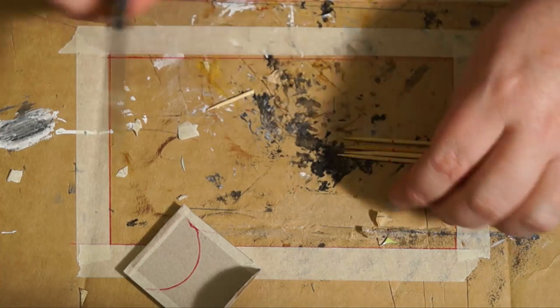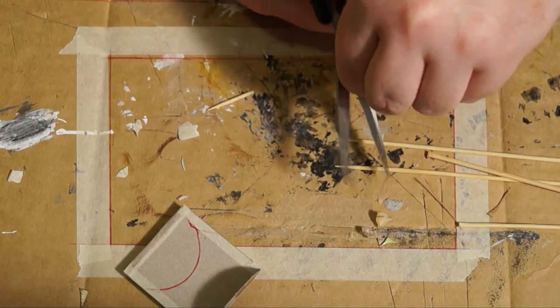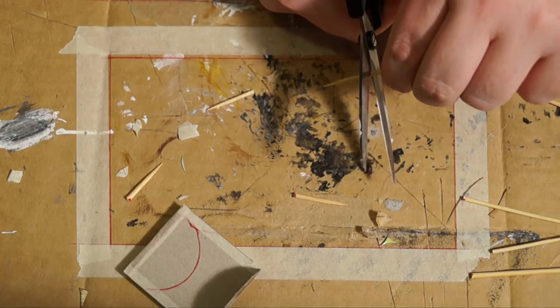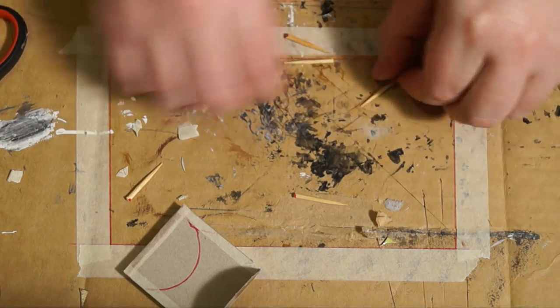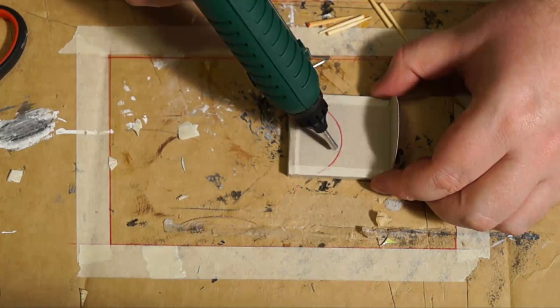Now the trick with cutting wood, everyone asks me what kind of scissors am I using? These are just cheap scissors. The trick is to have them far back in the scissors, push them all the way back and cut very slowly. That should stop things from breaking and cracking.